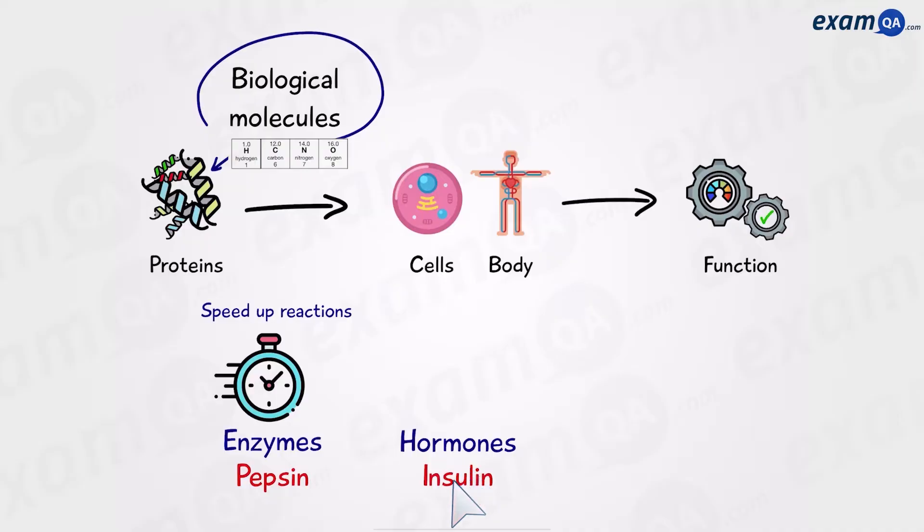Hormones, such as insulin, which are chemical messengers that travel in the blood.